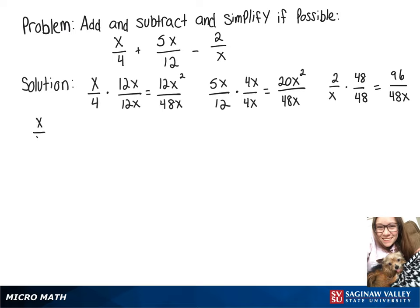Now we can rewrite our original problem, x over 4 plus 5x over 12 minus 2 over x, as 12x squared over 48x plus 20x squared over 48x minus 96 over 48x.